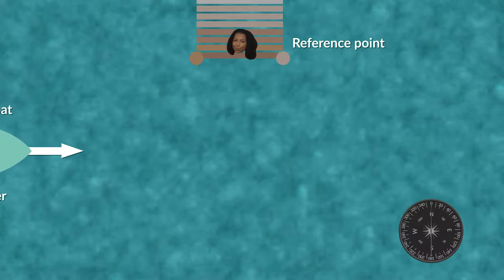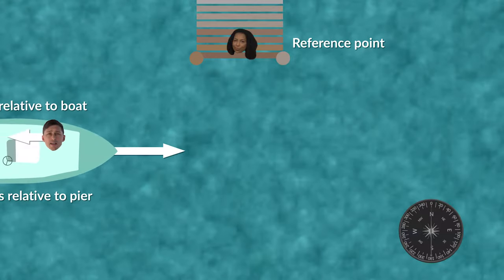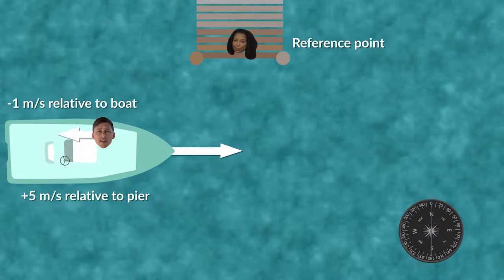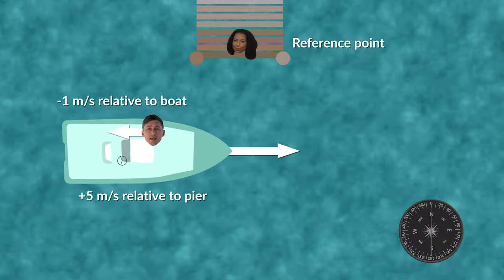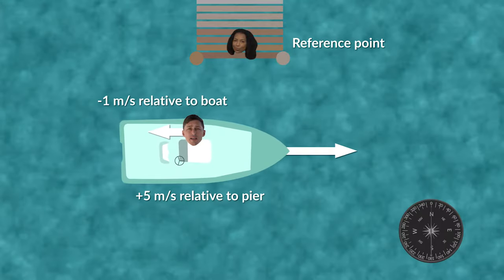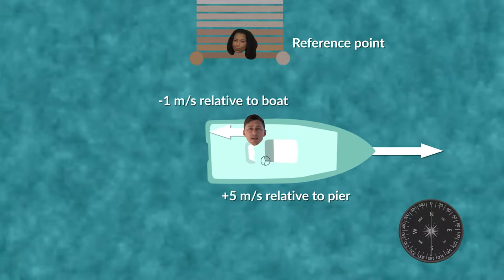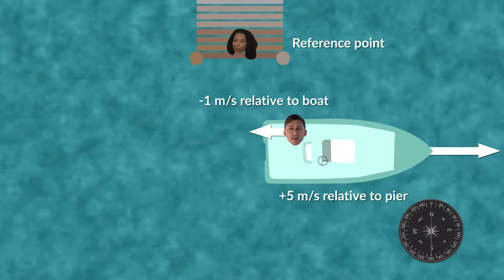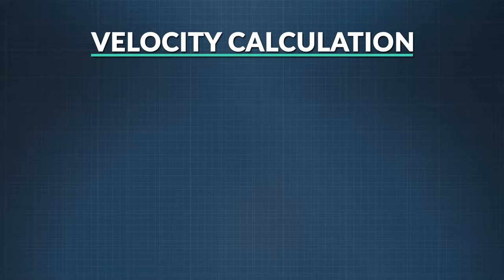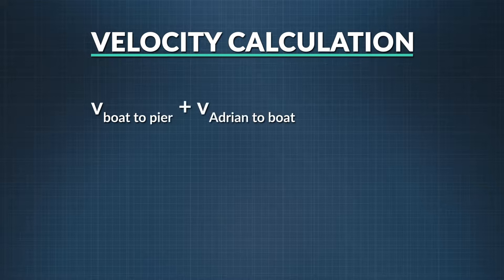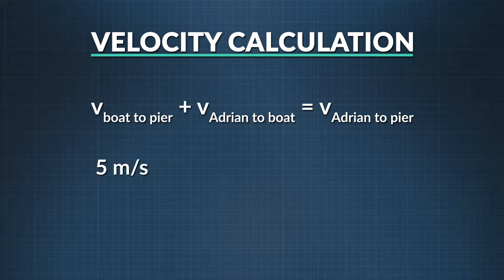Now what if I was to walk in the opposite direction on the boat? The boat is still moving at 5 meters per second in the positive direction, but this time I am moving at 1 meter per second in the negative direction, or negative 1 meter per second. What will my velocity be relative to the pier this time? We'll still add v sub boat-to-pier and v sub Adrian-to-boat. V sub boat-to-pier is still 5 meters per second, but v sub Adrian-to-boat is negative 1 meter per second. So the resultant velocity will be 4 meters per second, still in the positive direction.